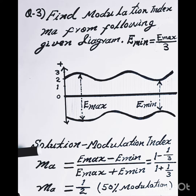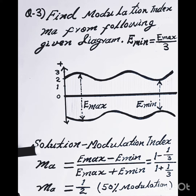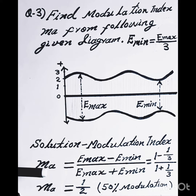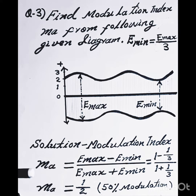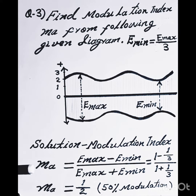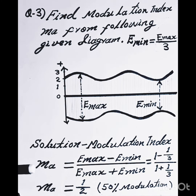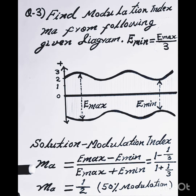Solution: Modulation index MA equals E maximum minus E minimum divided by E maximum plus E minimum. Substituting the value from E minimum equals E maximum upon 3, this becomes 1 minus 1 upon 3 divided by 1 plus 1 upon 3.